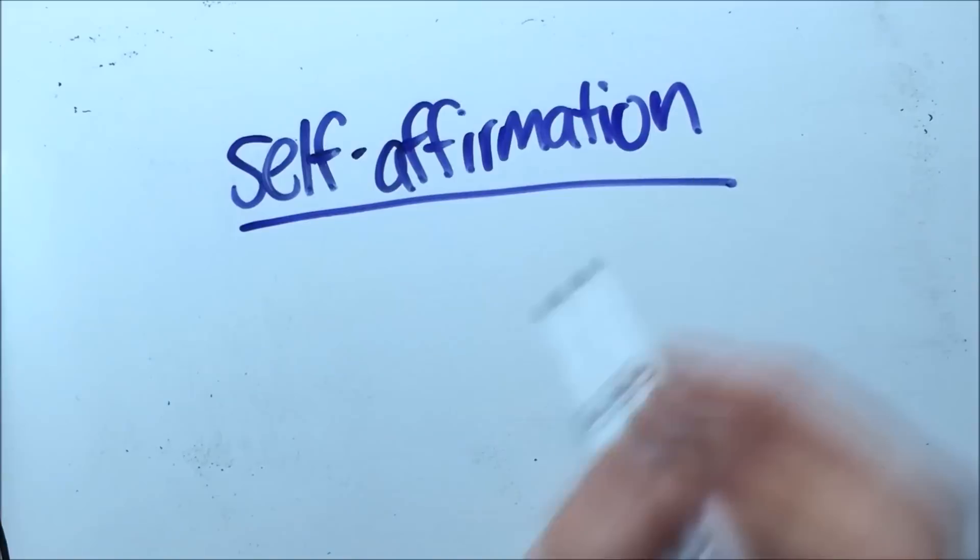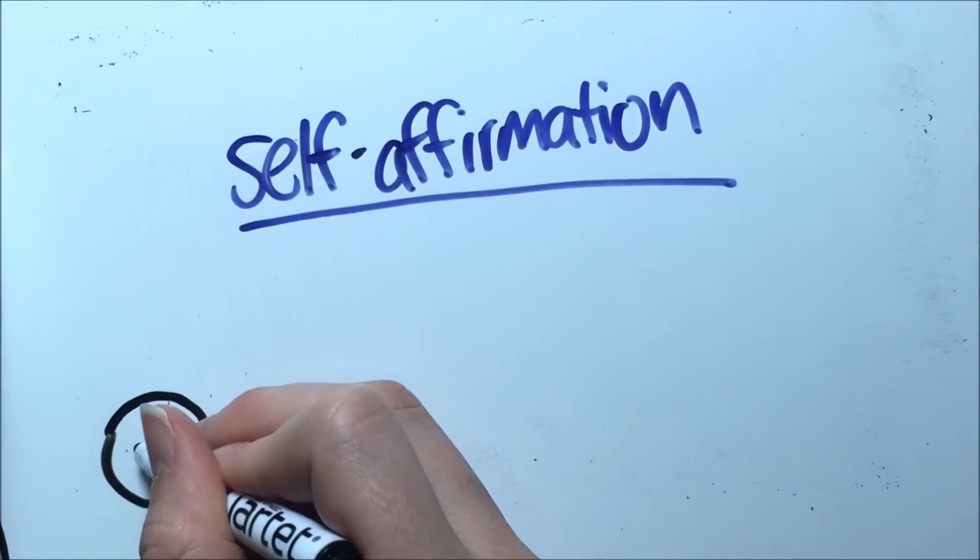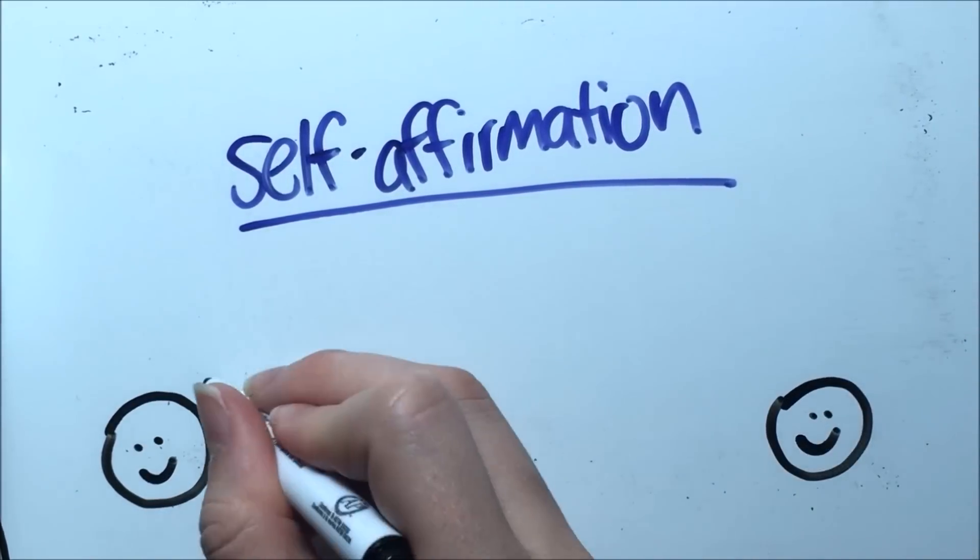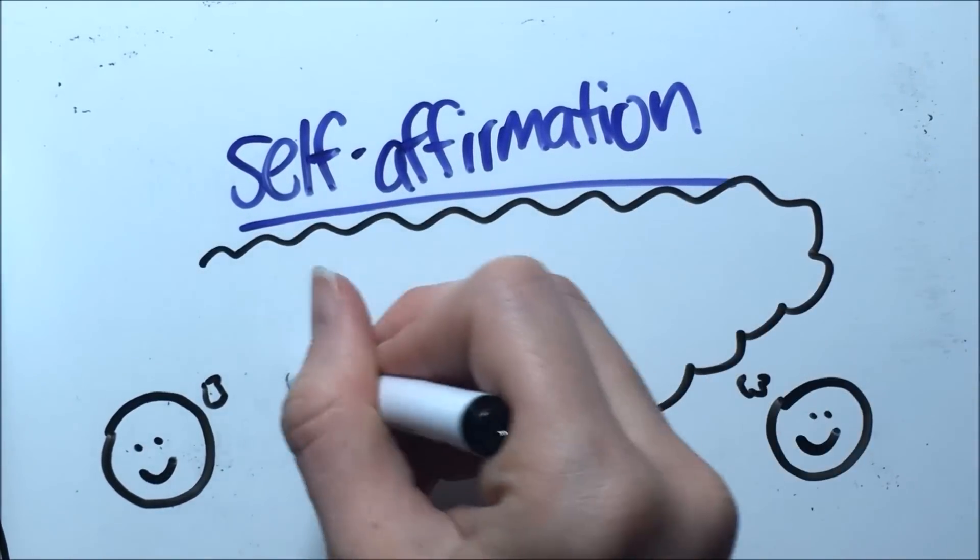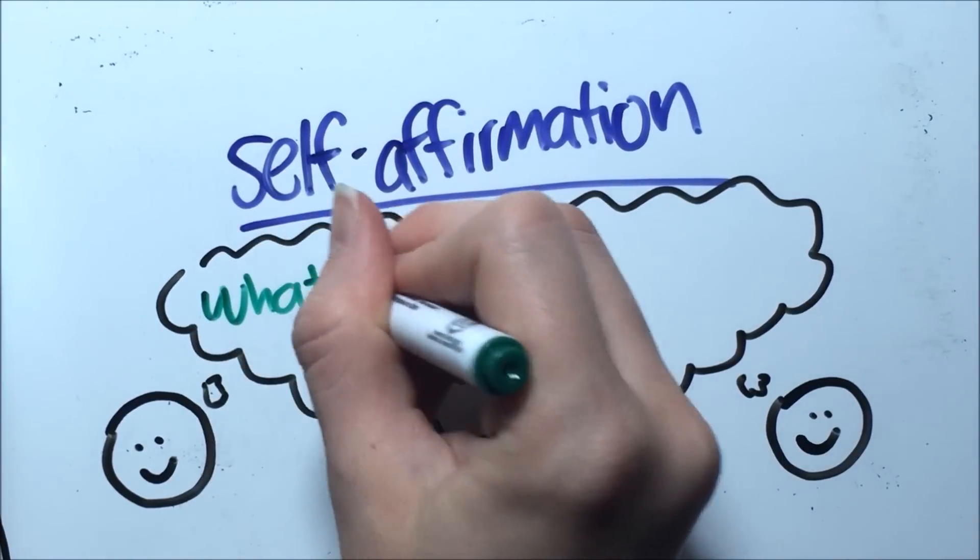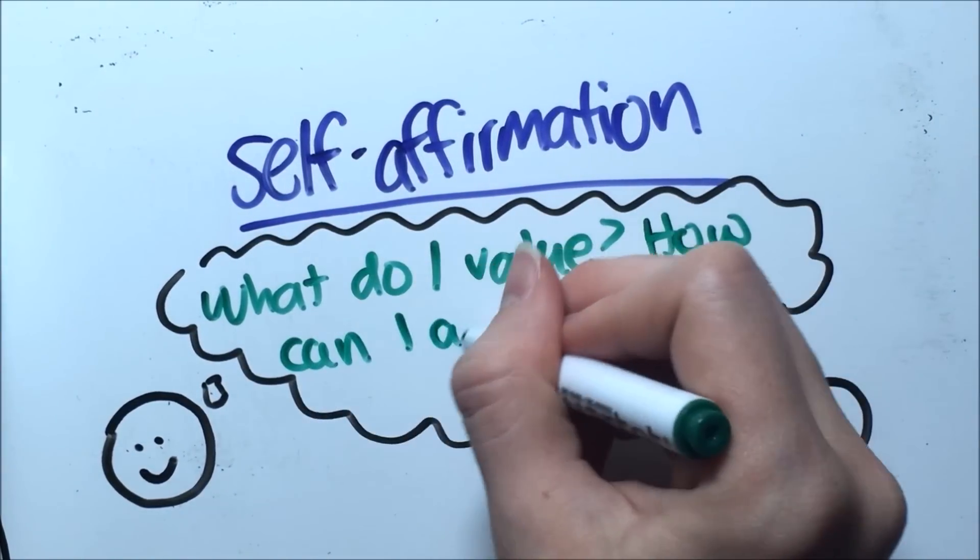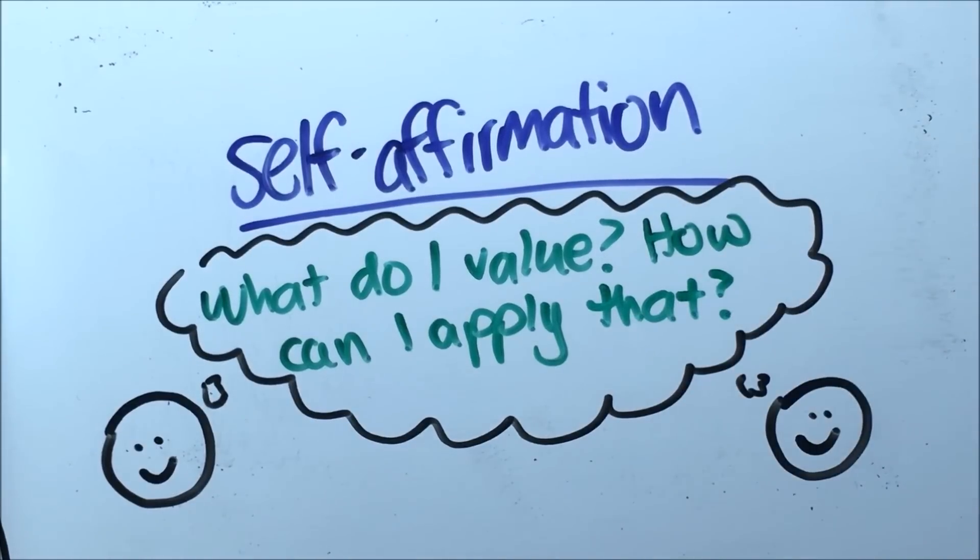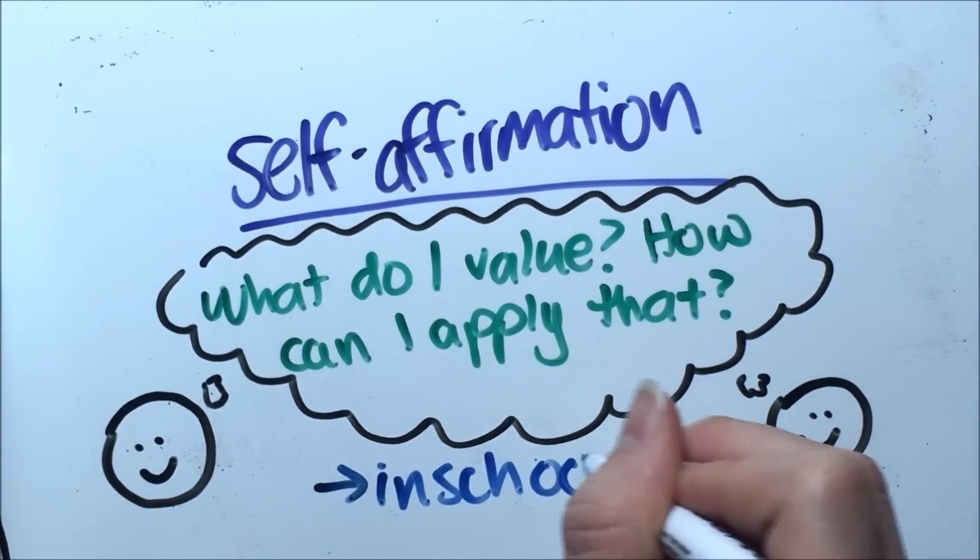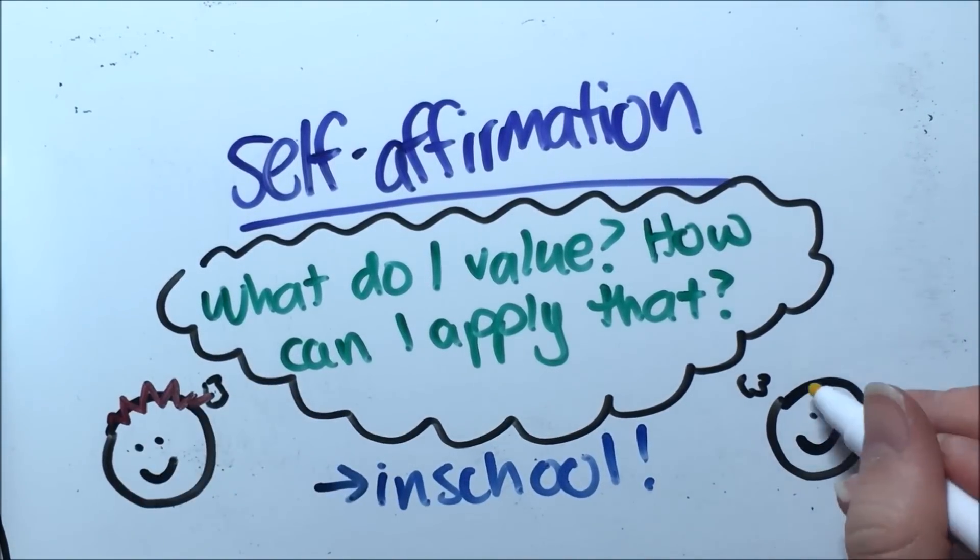First off, exercises in self-affirmation, which include listing and applying your personal values, have been helpful with students' ability to cope with threats to their identity. If we can help Bob identify values of his, and then help him come up with ways in which those values can be applied to school, he can be able to see how he can use what he is good at and what he cares about in a school setting.